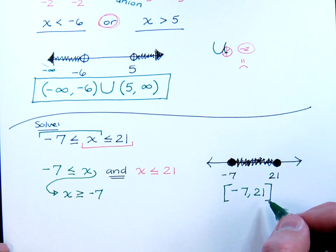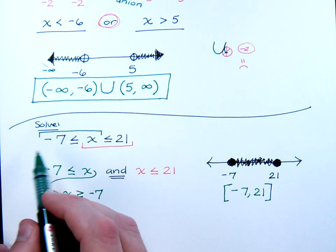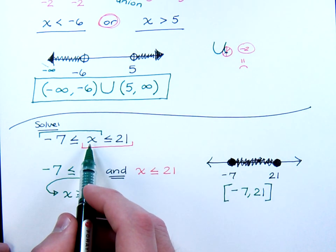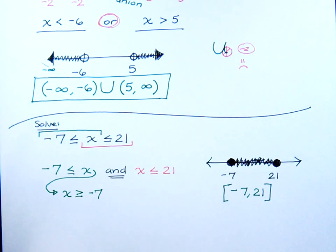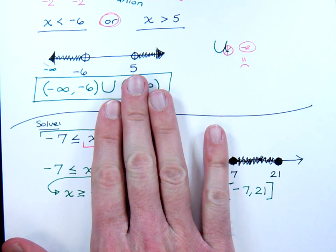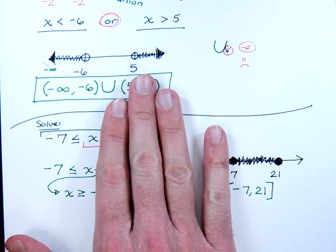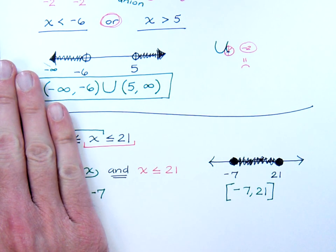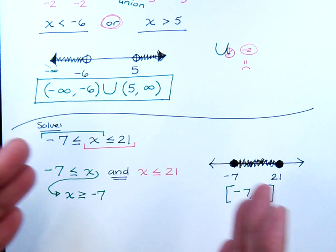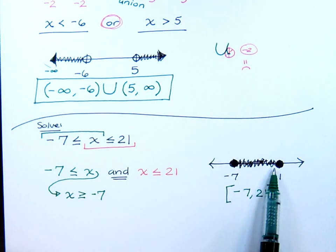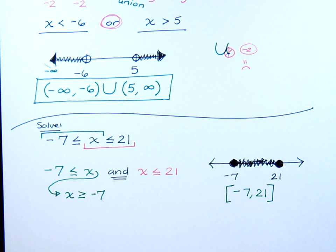Now here's an easier way of looking at this compound inequality. Look at x. x is between negative seven and 21. x is greater than or equal to negative seven. And x is less than or equal to 21. So it has to be all those numbers that are in between these guys. Anything that's in between negative seven and 21 is going to be your solution set. Now if we keep that in mind,